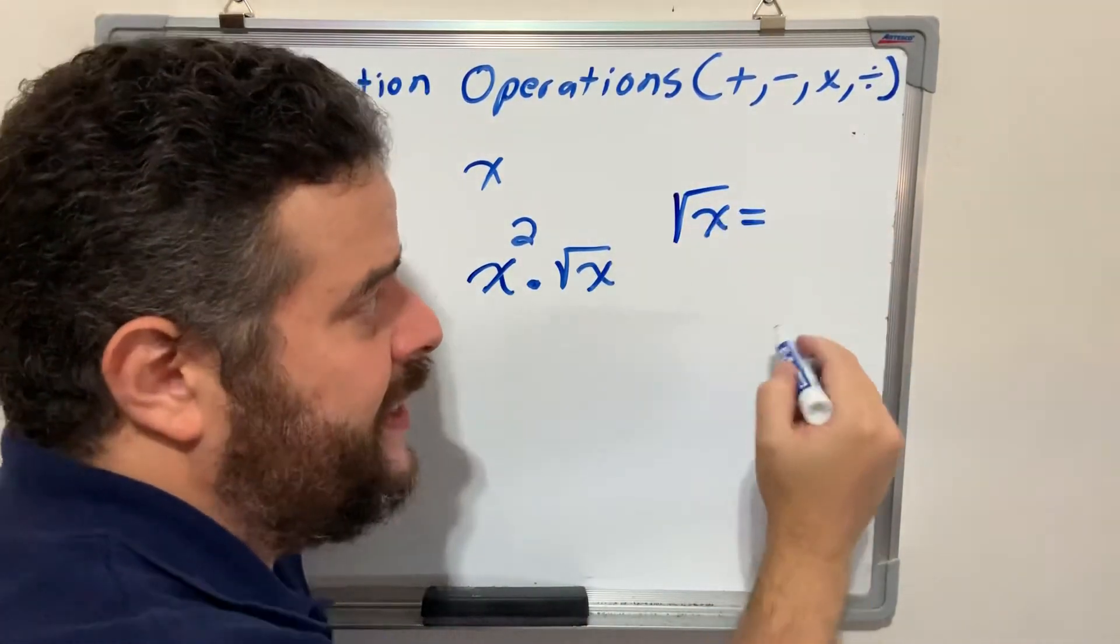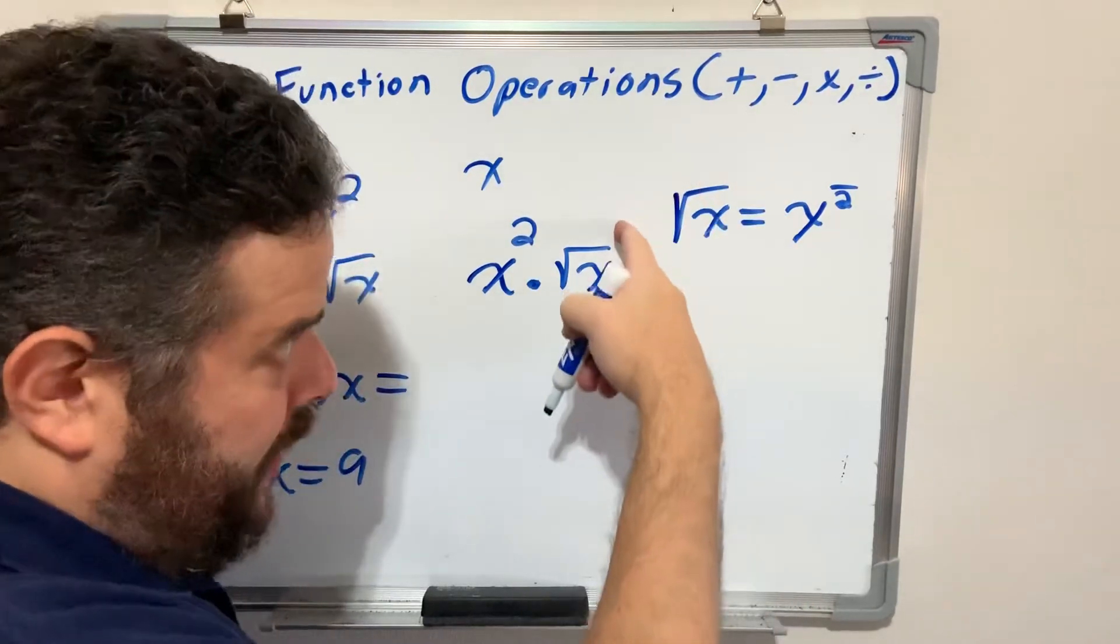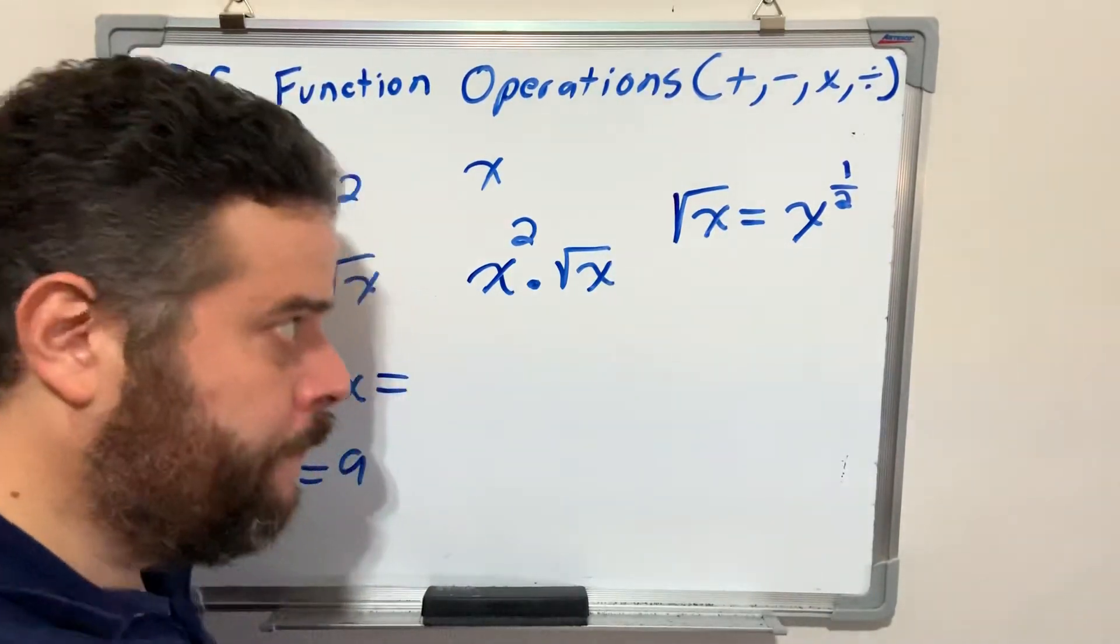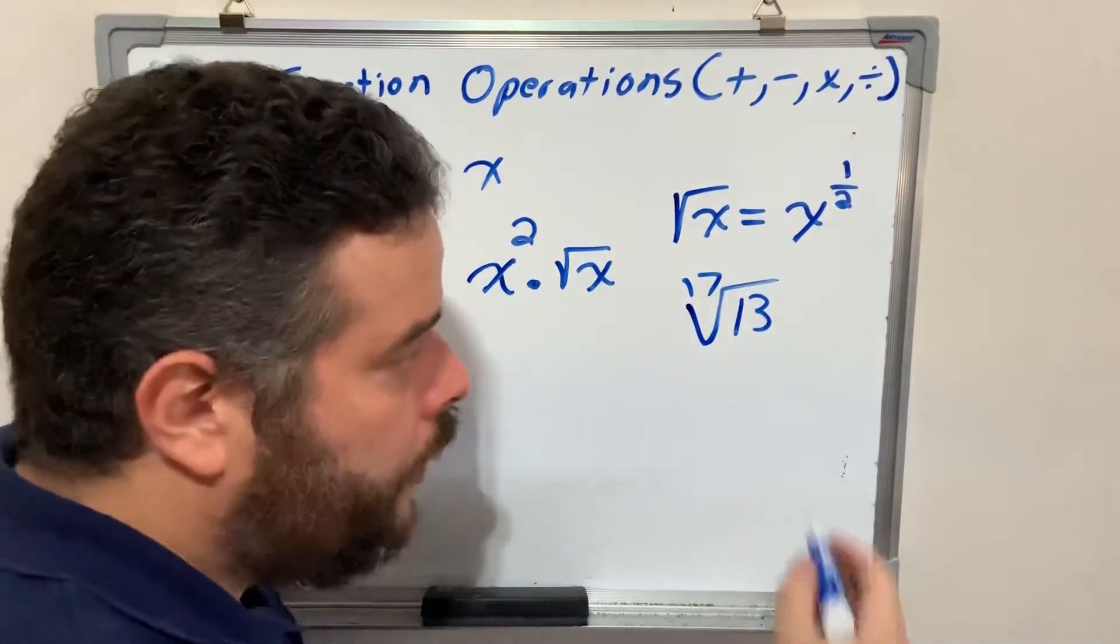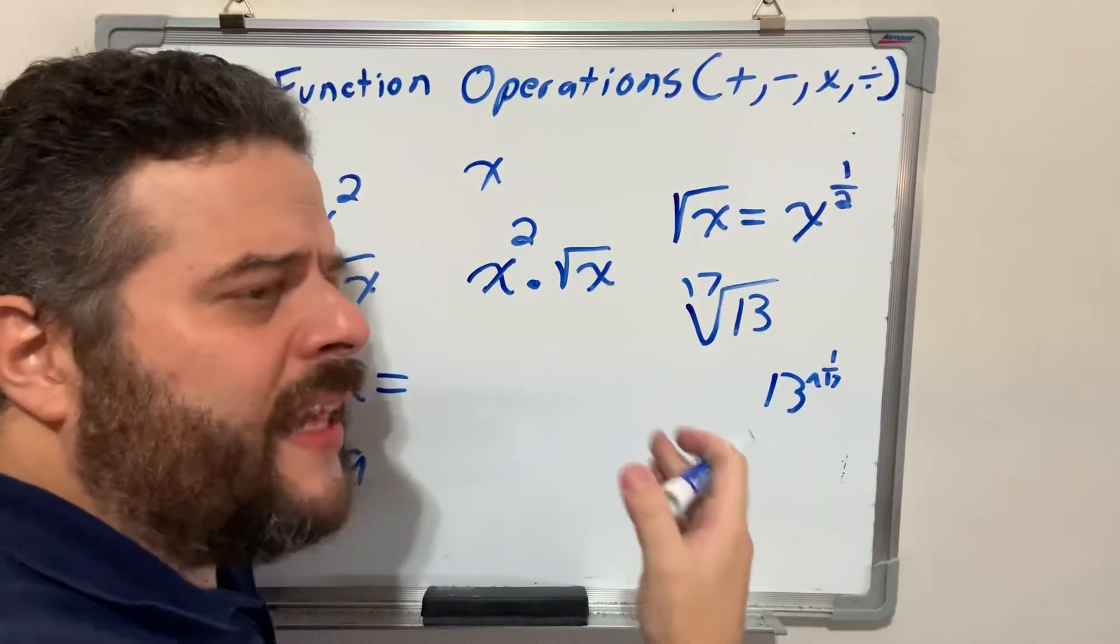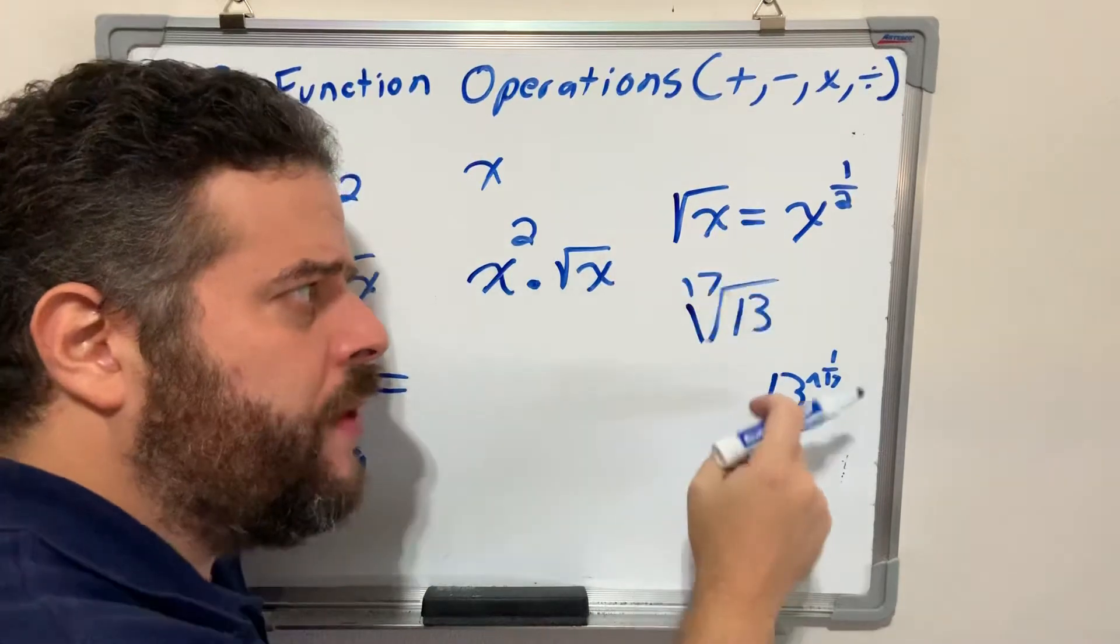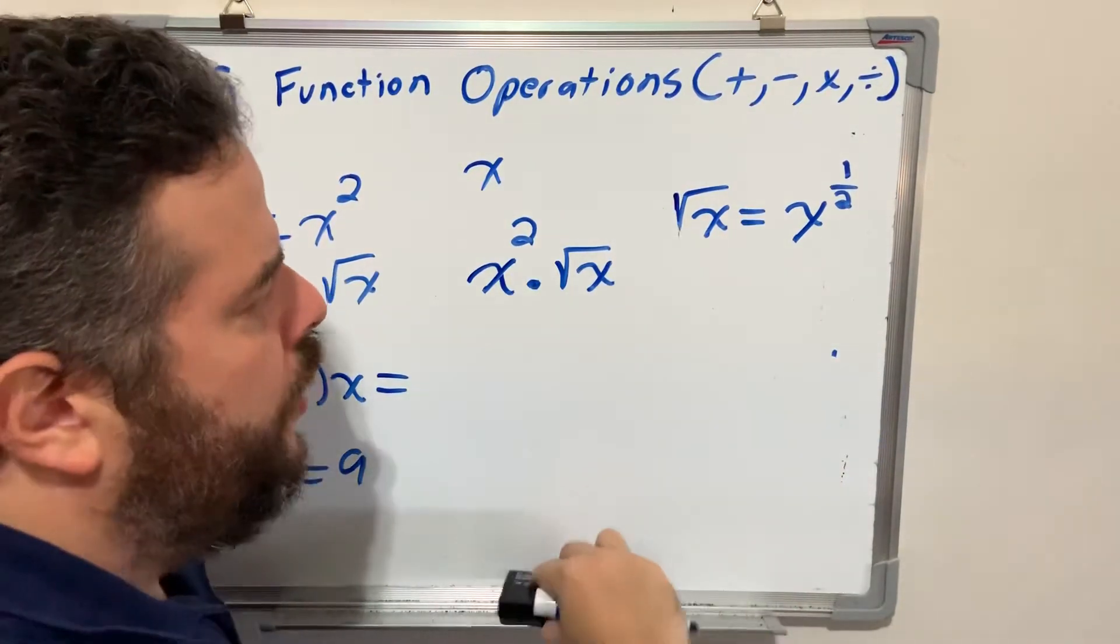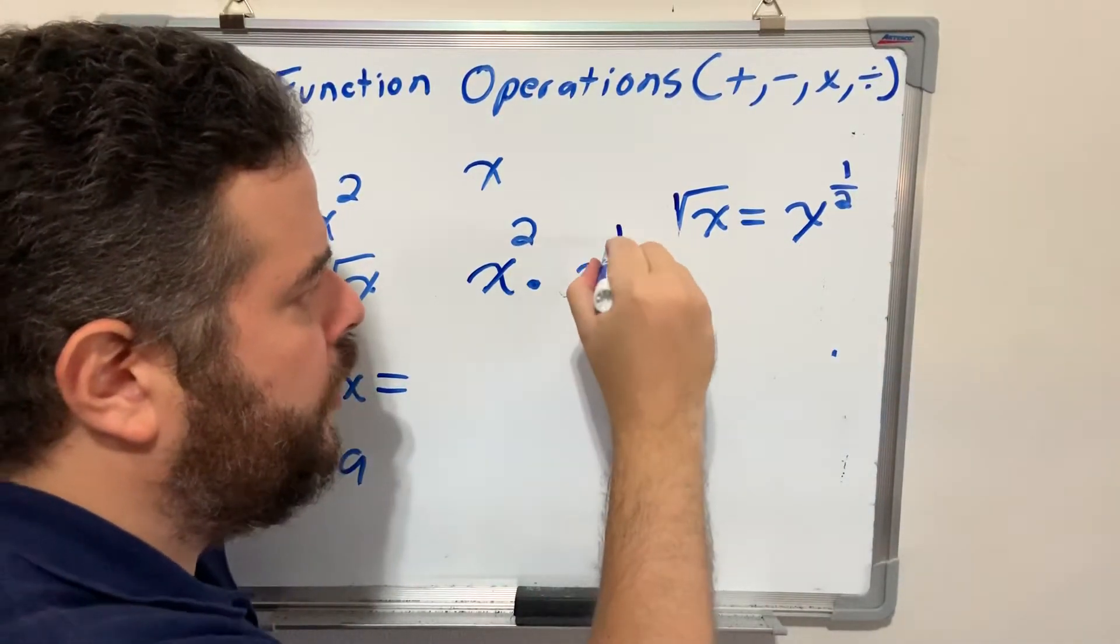In order to multiply, I have x squared times square root of x. It's very difficult to work with one exponent and one radical. We're either going to turn both into radicals or both into exponents. I always recommend 90% of the time, turn it into an exponent and work with fractions. If you remember the rules of exponents and radicals, square root of x is the exact same thing as x to the 1 half. This also helps you in your calculator. If you need 17th root of 13, you can raise 13 to the 1 over 17.